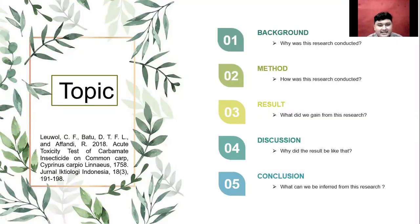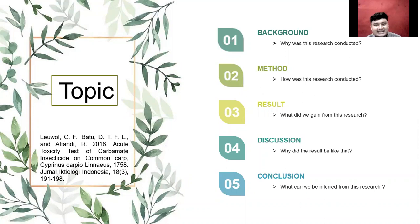We have five topics to discuss. First, background — why was this research conducted. Second, method — how was this research conducted. Third, result — what did we gain from this research. Fourth, discussion — why did the result turn out that way. And finally, conclusion — what can be inferred from this research.